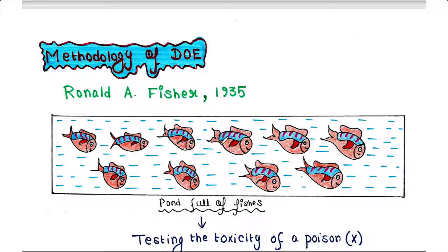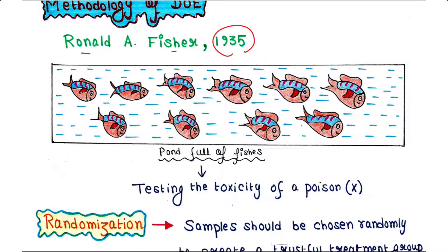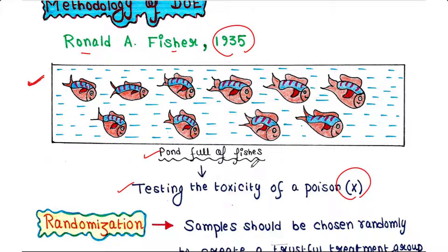Now let's talk about the methodology of experimental design. Ronald A. Fisher in 1935 proposed a methodology of experimental design. For your understanding, I am showing an example experiment here: suppose a pond is full of fishes and we want to test the toxicity of a particular poison on these fishes. What methodologies will we follow?